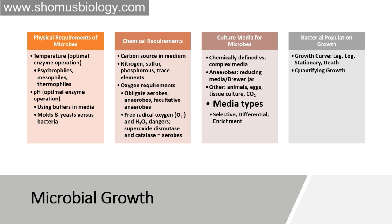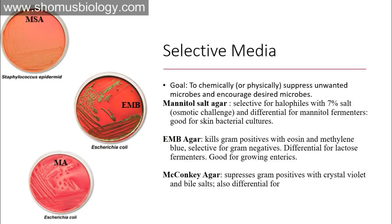Now it's time to talk about the types of media: selective media, differential media, and enrichment media. Selective media's goal is to chemically suppress unwanted microbes and encourage the growth of desired microbes. From several different types of bacteria, we selectively try to see the colony of one desired bacterium. Examples of selective media include mannitol salt agar, EMB agar, and MacConkey agar. Mannitol salt agar is selective for halophiles with 7% salt as an osmotic challenge, and also differential for mannitol fermenters. It is good for skin bacterial cultures.